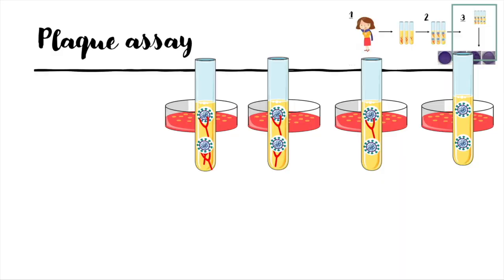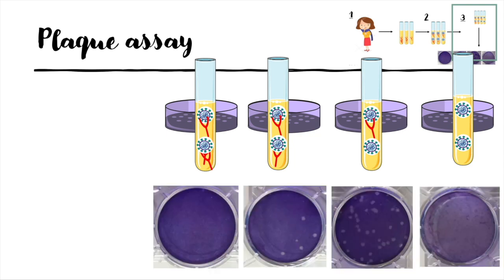The virus particles that are neutralized are not able to infect the cell anymore. Then we fixate and stain the cell culture. The dead cells are not colored, and thus each white round is a plaque-forming unit.